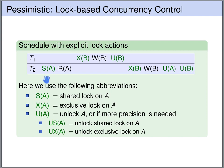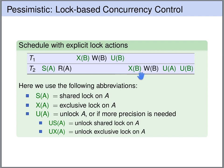Let's look at the schedule. Transaction 2 obtains a shared lock on A, then reads A — that's fine. Transaction 1 obtains an exclusive lock on B — no other transaction has any lock on B, so that's fine. It writes B, then unlocks the exclusive lock on B. Now transaction 2 obtains an exclusive lock on B — also allowed, because transaction 1 has already unlocked B. Transaction 2 can then write B, unlock A, and unlock B.